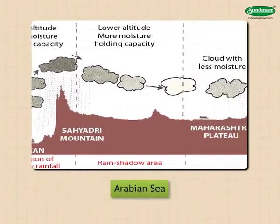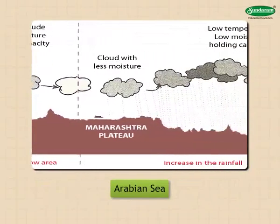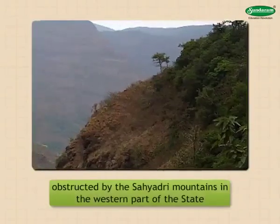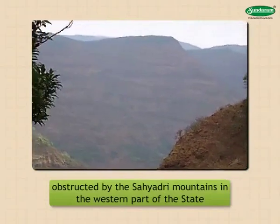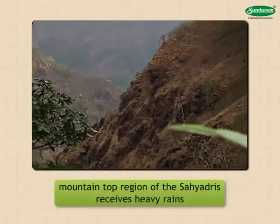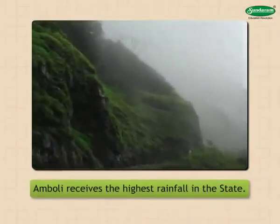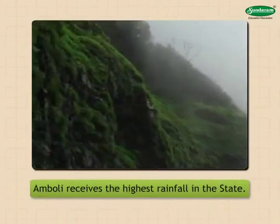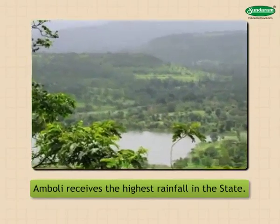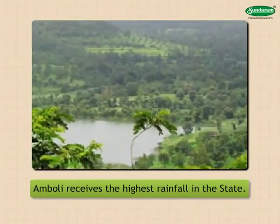Rainfall: from June to September, southwest monsoon winds blow over Maharashtra. These winds come from the Arabian Sea and, as they travel over the sea, they are full of moisture. Maharashtra receives rains from these winds. These winds are obstructed by the Sahyadri mountains in the western part of the state. Therefore, the mountain top region of the Sahyadris receives heavy rains. Amboli receives the highest rainfall in the state.